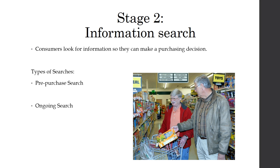Companies love it much more when you are going through a pre-purchase search than an ongoing search. With an ongoing search, you may find lots of things you like, but that doesn't mean you're going to buy. Pre-purchase is their preference, but they accept that sometimes you'll have an ongoing search. If you go looking at cars in a car lot, they want you to be in a pre-purchase mindset — you may be going just to look, and that's ongoing.